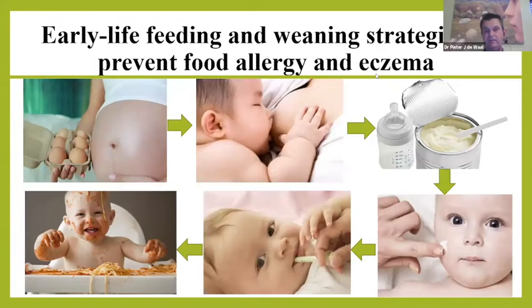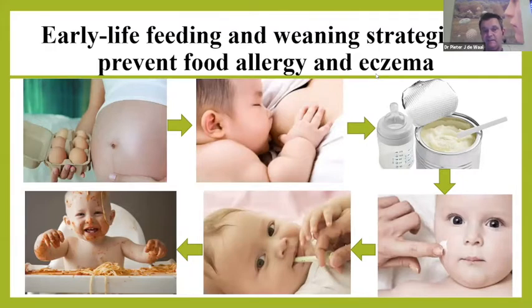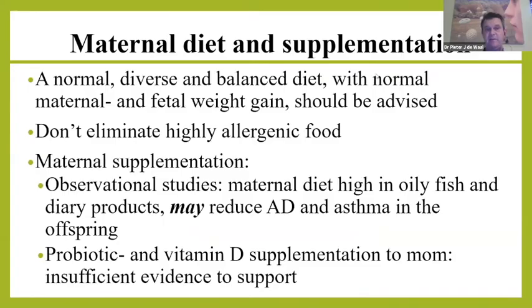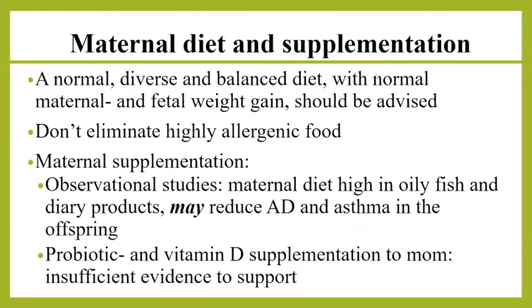For antenatal prevention and maternal diet: mothers should not be advised to eliminate highly allergenic foods, regardless of family history or previous child's reaction severity. Mom should follow a normal, diverse, and balanced diet with careful monitoring of maternal and fetal weight — rapid weight gain has been shown to increase food allergy risk. Regarding maternal supplementation, small observational studies show a diet high in oily fish and dairy may reduce atopic dermatitis and asthma in offspring, but probiotics and vitamin D supplementation currently lack sufficient evidence.